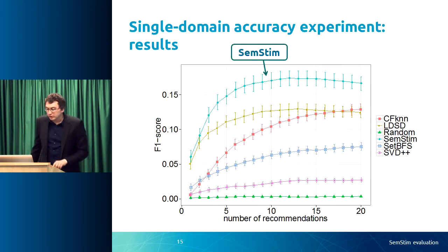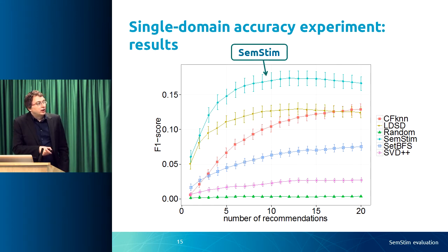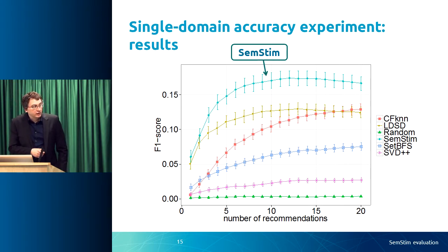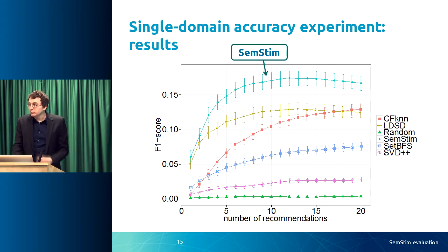In the results graph, the F1 score is shown with the number of recommendations going up to 20. SEMSTEM dominates the performance of the other algorithms — the difference is statistically significant with overlap in the error bars. This shows that SEMSTEM has comparable performance to state-of-the-art recommendation algorithms on the top-K recommendation task.